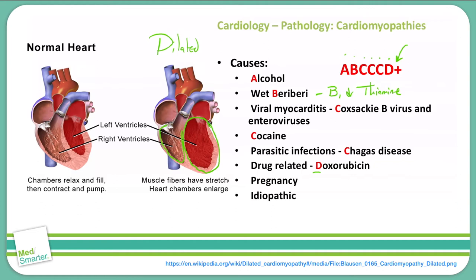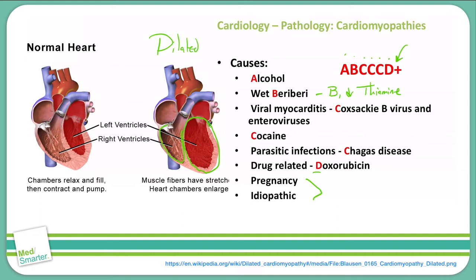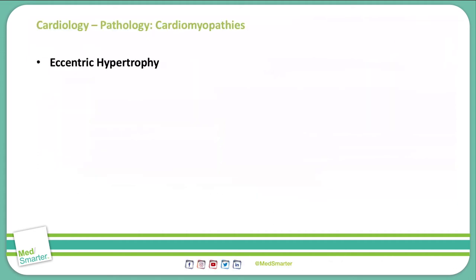The plus adds two further causes: pregnancy can cause dilated cardiomyopathy, and idiopathic — many dilations of the heart have no known cause yet. For the USMLE, questions will most likely focus on one of these six main areas, as they are the most common causes. Dilated cardiomyopathy causes eccentric hypertrophy, where sarcomeres are added in series.